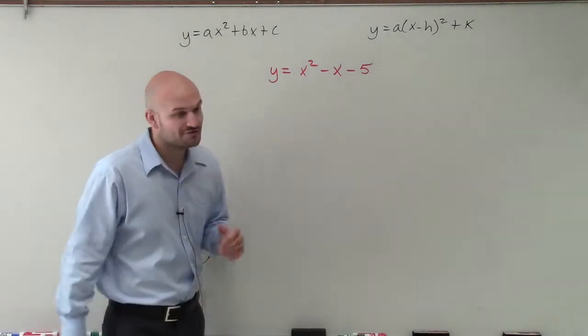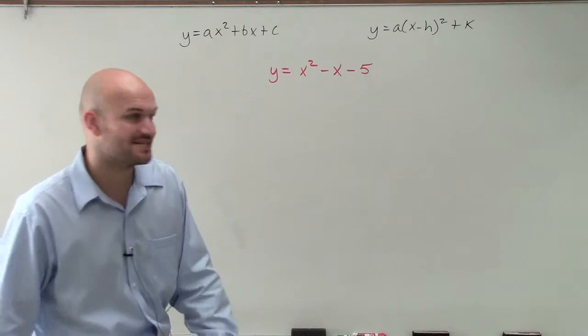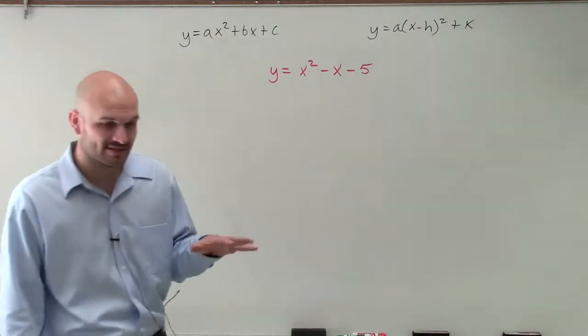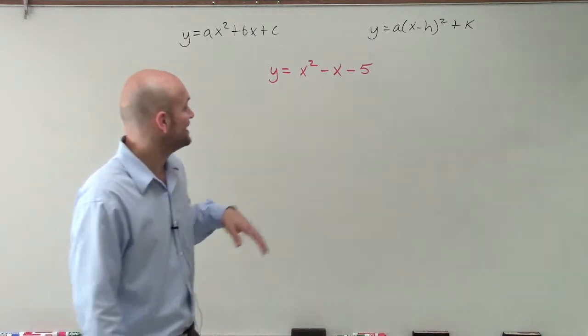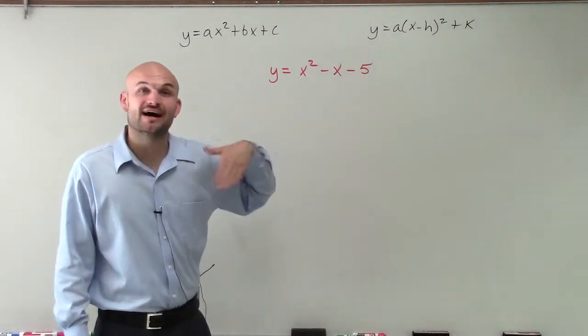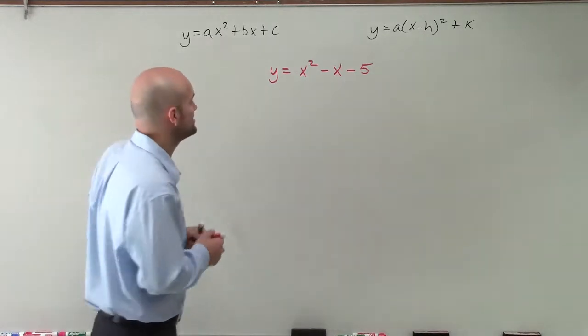Welcome. So what I want to do is show you how to complete the square for this problem when I have y equals x squared minus x minus 5. And this one's going to get a little bit trickier because what we're going to notice is our b is not an even number that we can divide by 2. So we're going to end up having a fraction, which is cool. I just want to take you through it.